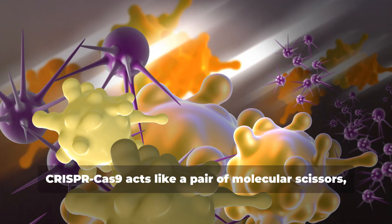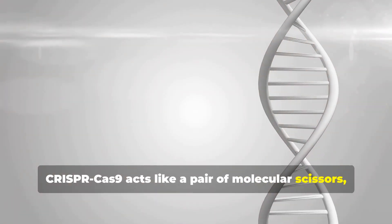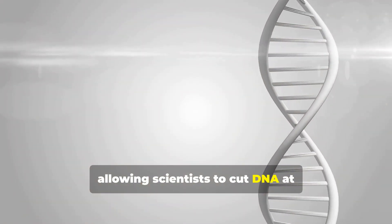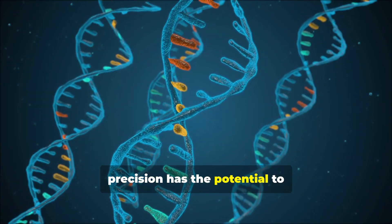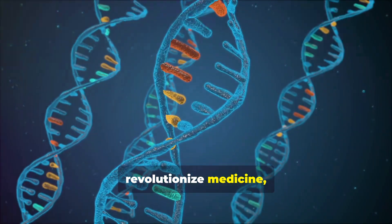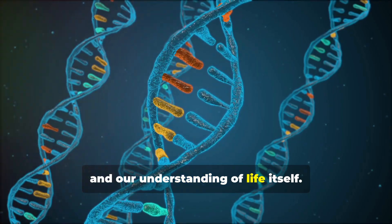CRISPR-Cas9 acts like a pair of molecular scissors, allowing scientists to cut DNA at specific locations. This ability to edit the genome with such precision has the potential to revolutionize medicine, agriculture and our understanding of life itself.